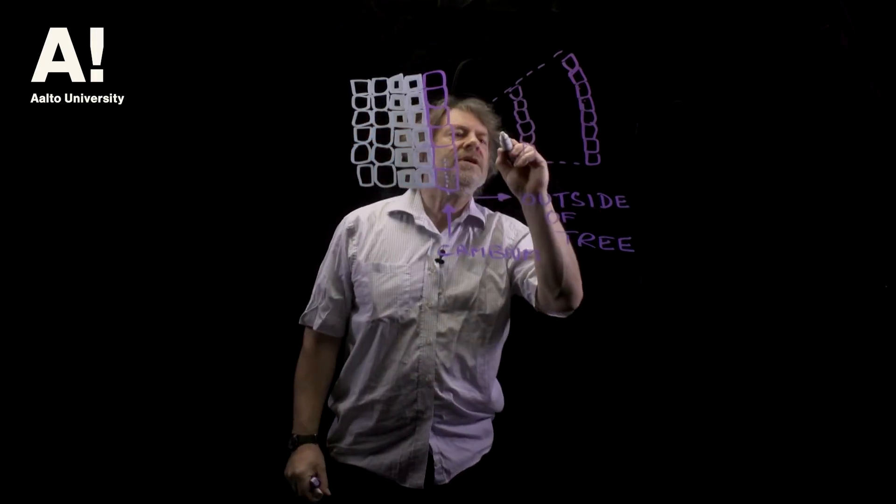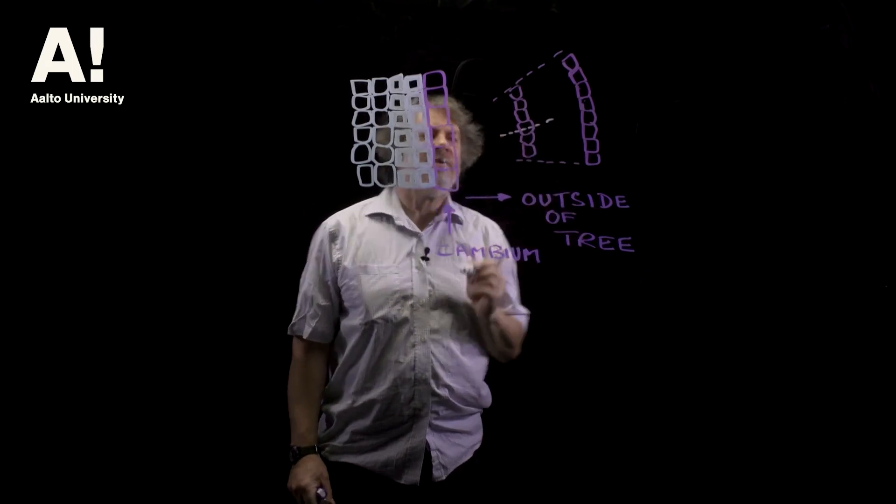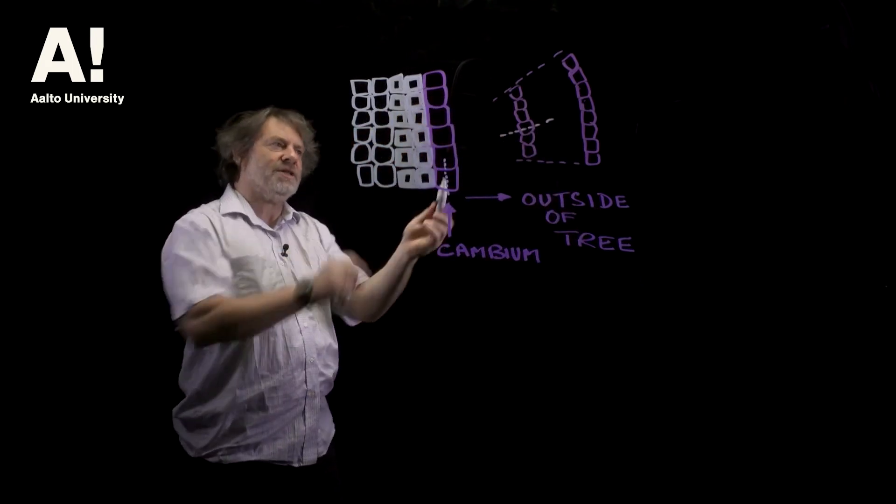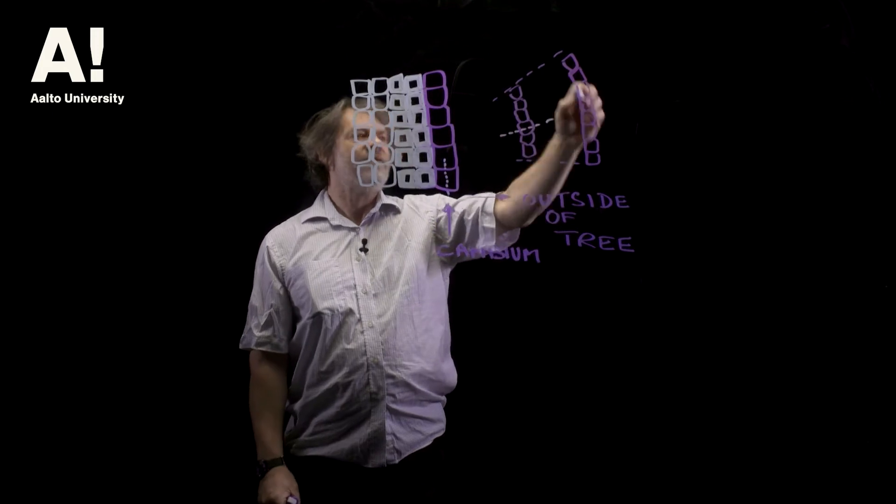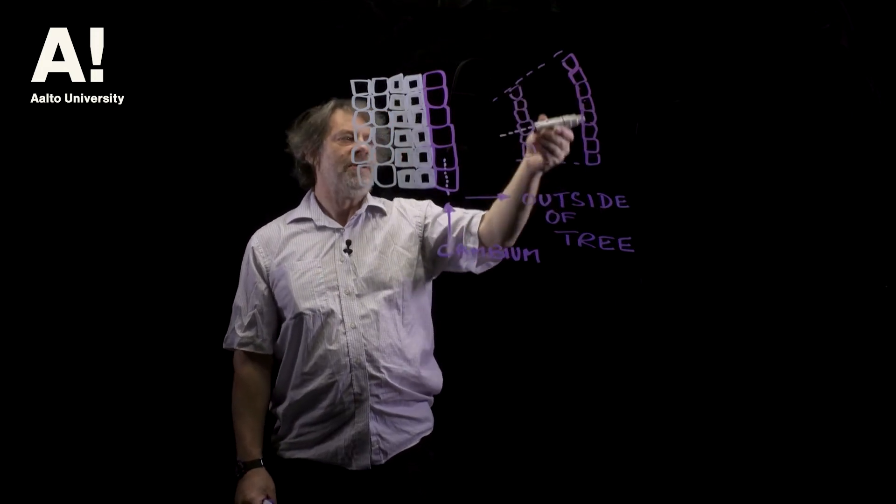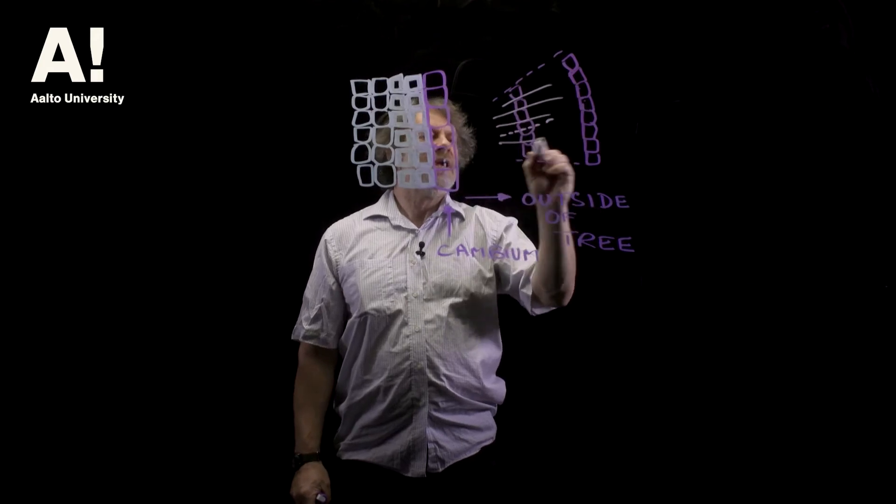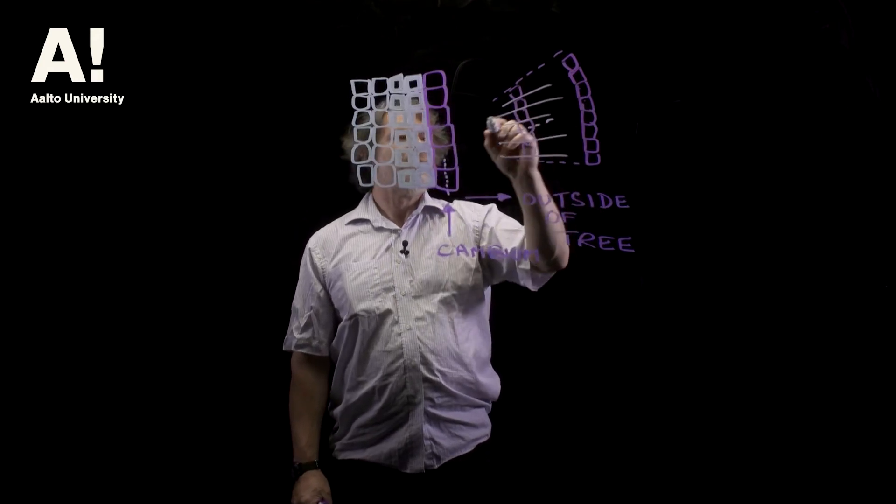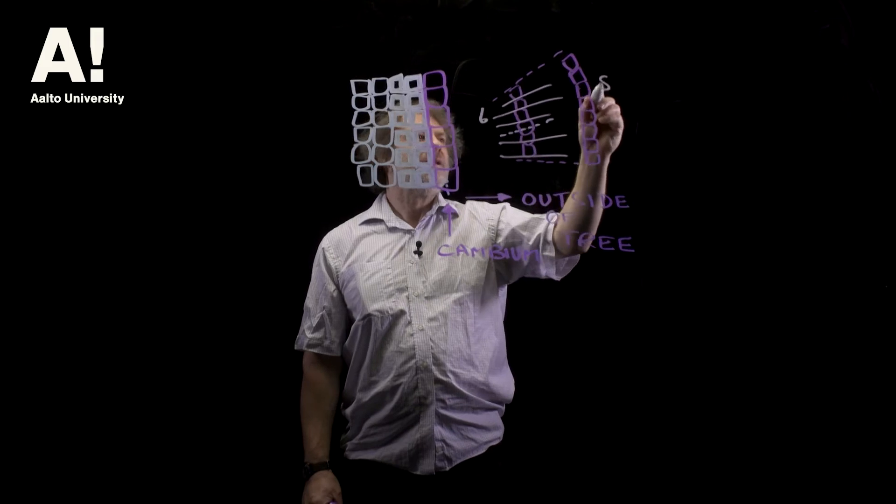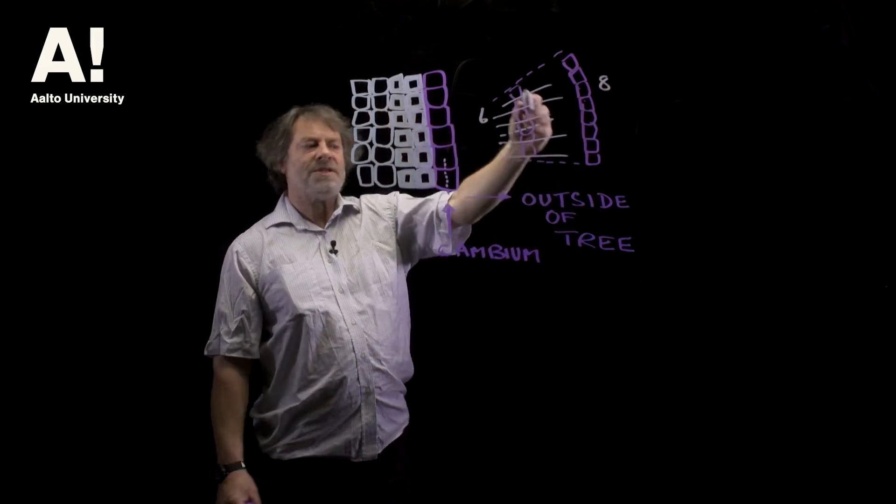The cells don't get bigger they stay the same size so now we have to have cell division in that sense to accommodate the fact that we have this larger radius so we're creating cells as we go out. So what we're ending up with is here we have six cells at that point and eight cells at that point so that's anticlinal division.